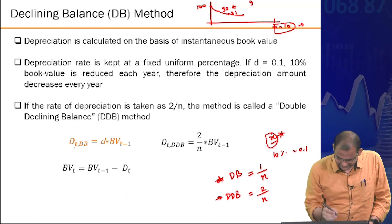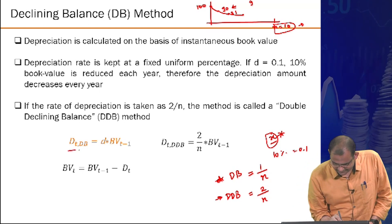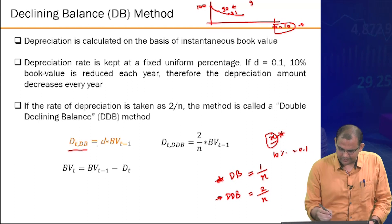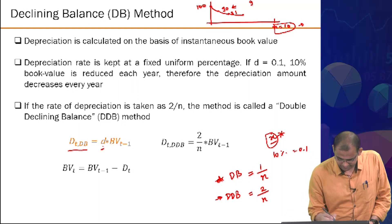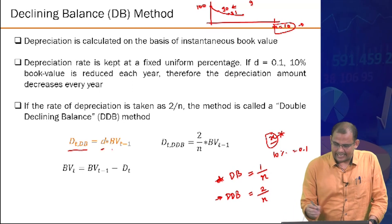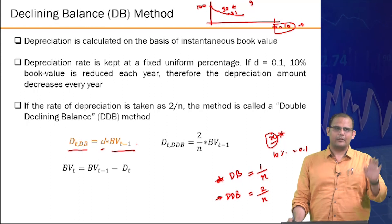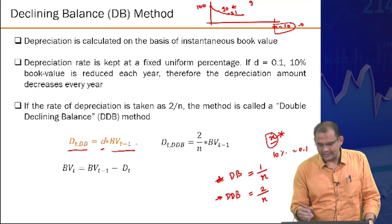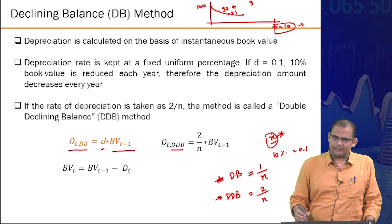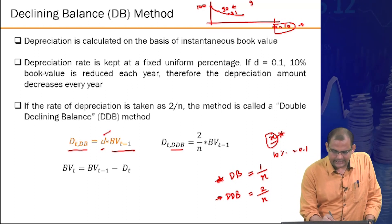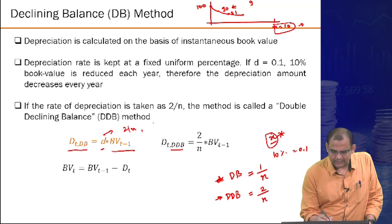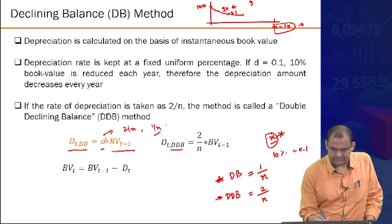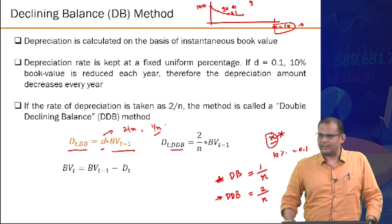At any point in time, the depreciation amount is the applicable rate (d) multiplied by the instantaneous book value from the previous year. For DDB, d equals 2/N; for normal DB, d equals 1/N.